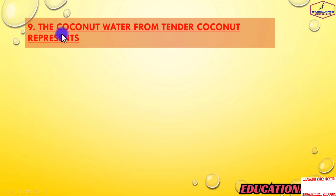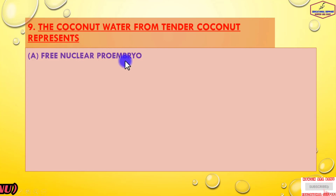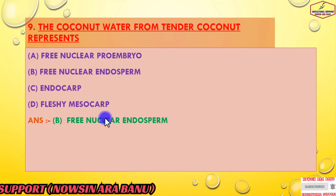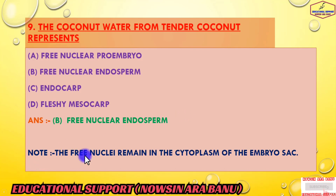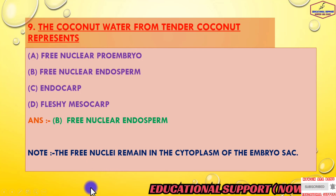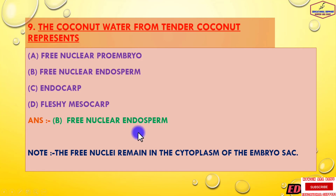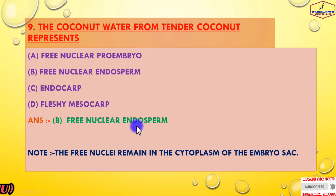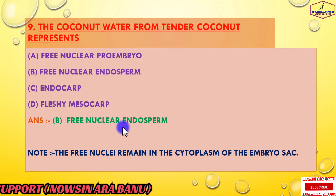Question 9: coconut water from a tender coconut represents — options: free-nuclear embryo, free-nuclear endosperm, endocarp, or fleshy mesocarp. The answer is option B, free-nuclear endosperm. Coconut water represents the free-nuclear or liquid endosperm. During development of the nuclear type of endosperm, the primary endosperm mother cell divides by free-nuclear divisions not followed by cell wall formation, so the free-nuclear endosperm remains in the cytoplasm of the embryo sac.